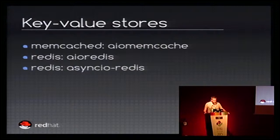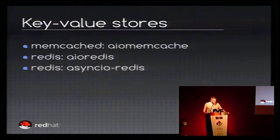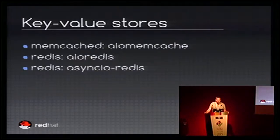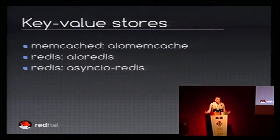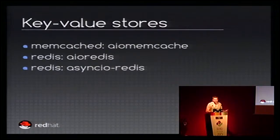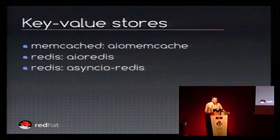For key-value stores, we have three drivers. For Memcached, you have aiomemcached. For Redis, you have two clients: aioredis and asyncio-redis. For me, it's not a bad thing to have two drivers for the same thing, because depending on your background and which API you prefer, you may take one or the other. Maybe later one will be discontinued, or maybe both will continue. At least you have the choice.